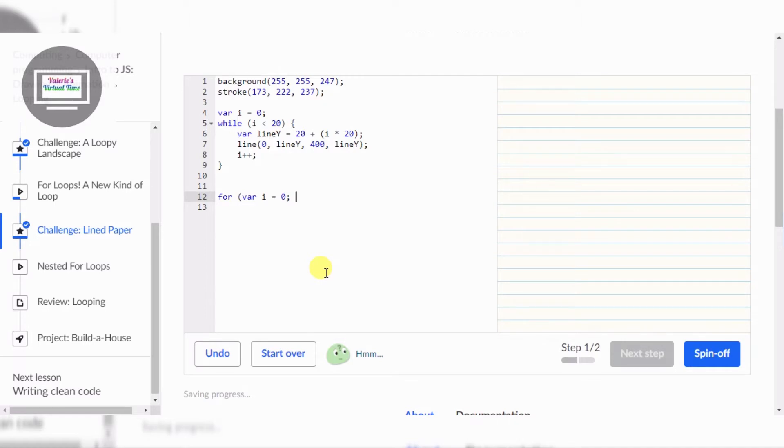Now we're going to need i less than 20. The last one is going to be i plus plus.